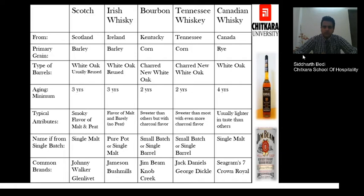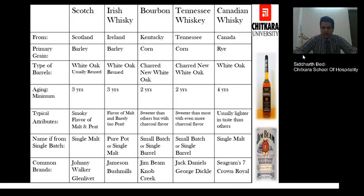Bourbon whisky is made in Kentucky, United States, using corn, in charred new white oak barrels, with a minimum aging of two years. It is sweeter than most other whiskies with a charcoal flavor; single batch or single barrel styles are used. Jack Daniel's and Jim Beam are famous brands in this category. Tennessee whisky is also made in Tennessee, United States, using corn in charred new white oak barrels, with a minimum of two years aging, a sweeter flavor, and small batches. Jack Daniel's and George Dickel are key brands.